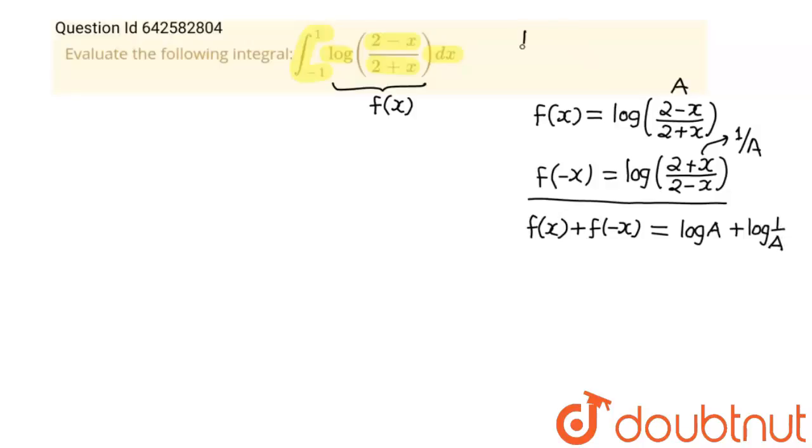So this will be log(a) + log(1/a). And we know that log(a) + log(b) is equals to log(ab). Now here you can see at place of a there is a, and at place of b this is 1/a. So both a will get cancelled out and this will become log(1) and value of log(1) is 0.